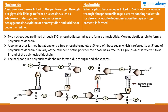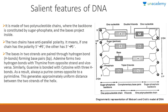You should know the difference between a nucleoside and a nucleotide. When a nitrogenous base is linked to a pentose sugar through a glycosidic linkage with no phosphate group attached, it forms a nucleoside. When a phosphate group is also attached to the sugar and base, it is called a nucleotide. In summary: sugar + base = nucleoside; sugar + base + phosphate = nucleotide.